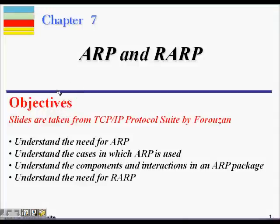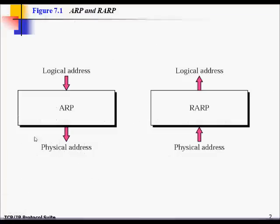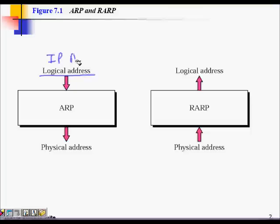In this lecture we will learn about ARP and Reverse ARP. ARP is Address Resolution Protocol and Reverse ARP is Reverse Address Resolution Protocol. When you are on a local area network, a host operates on two addresses: one is a logical address, for example your IP address, and the other is a physical address which is the MAC address of six bytes.